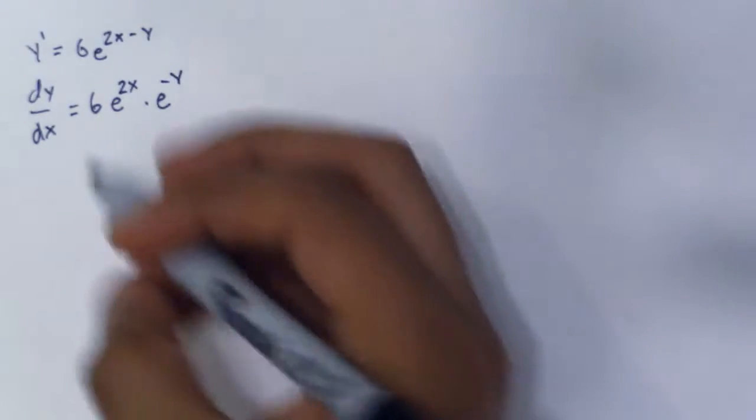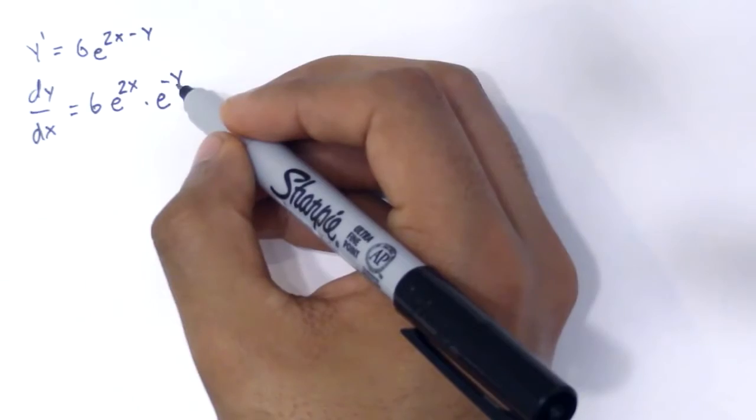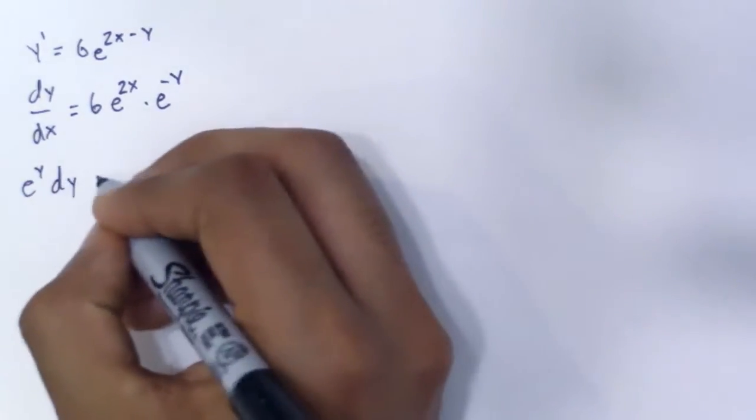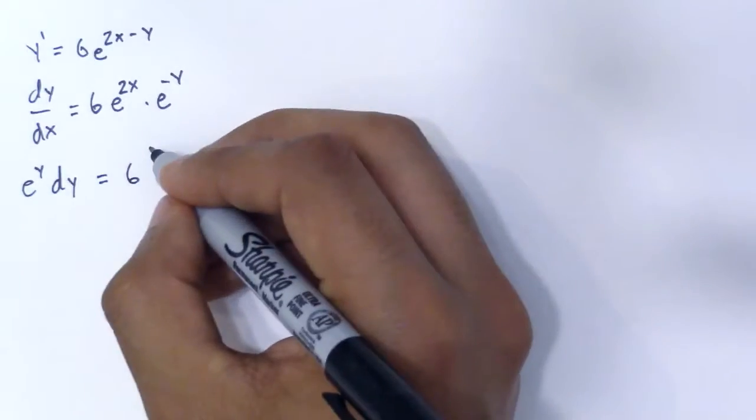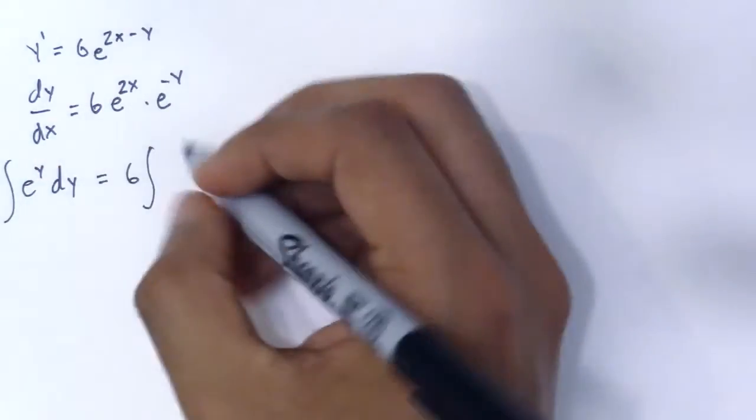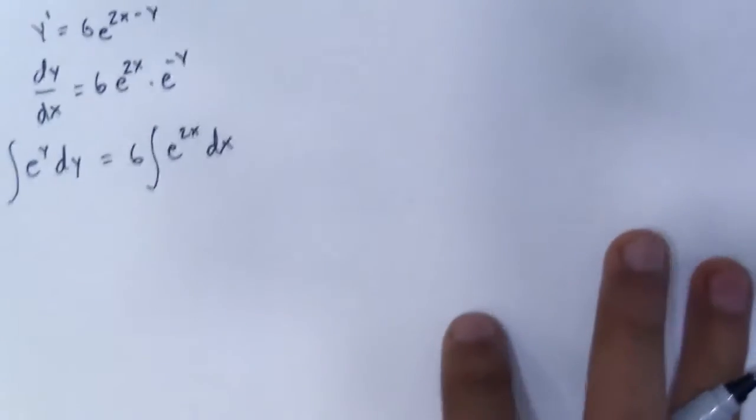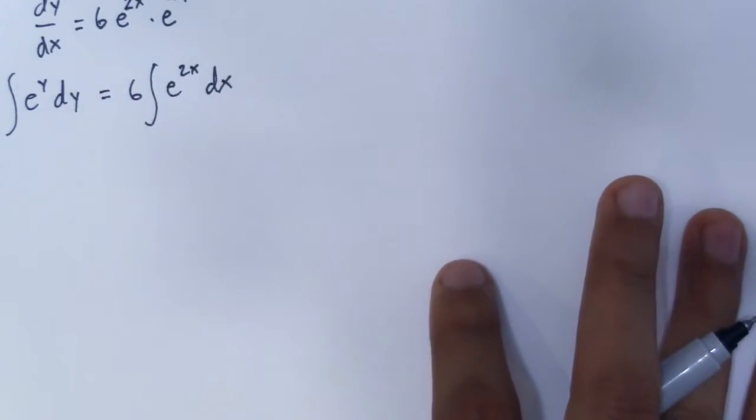a separable differential equation. So e^(-y) becomes e^y dy. I'm just going to write the integral of e^(2x) dx. So you get those equations, or those integrals.